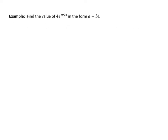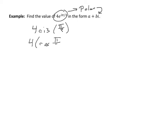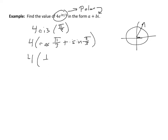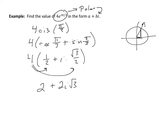So this next example is asking us to find the value of 4·e to the i·pi/3 in the form a plus bi. I'm going to take this and rewrite it as 4·cis(pi/3). That means 4 times cosine(pi/3) plus i·sine(pi/3). Cosine(pi/3) is one half, so that gives 4 times one half. Sine(pi/3) is root 3 over 2. I distribute the 4 in and get 2 plus 2i·root 3.